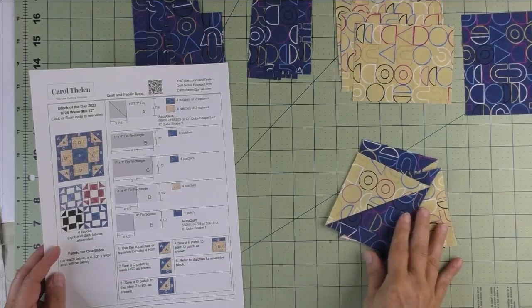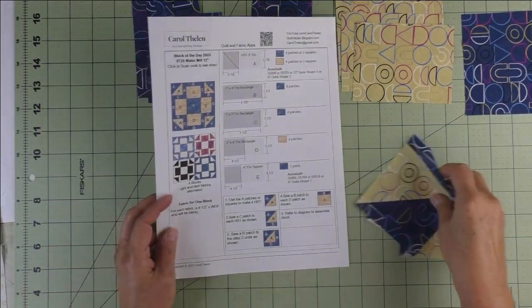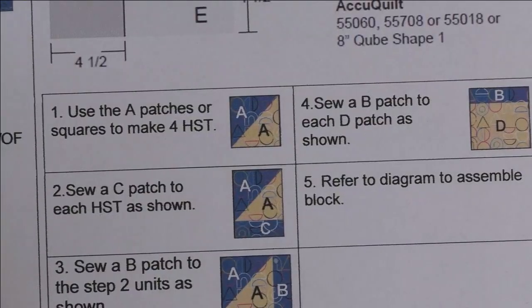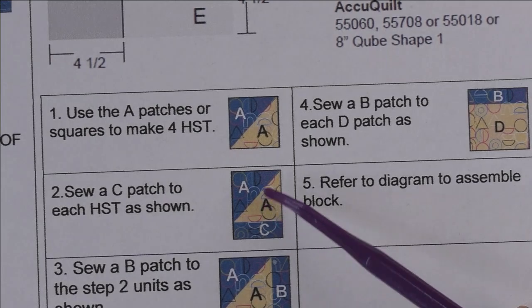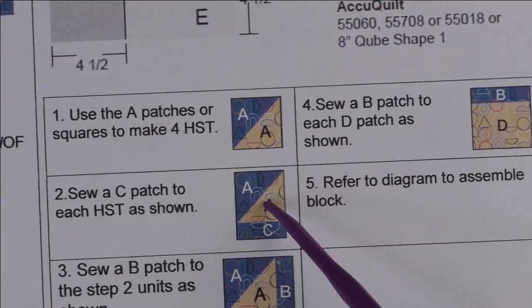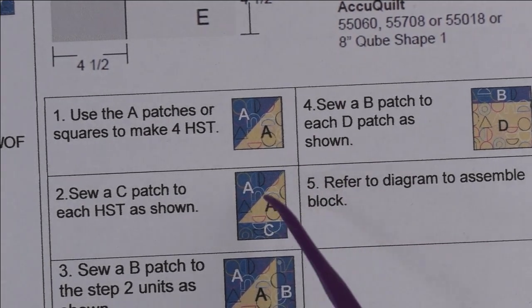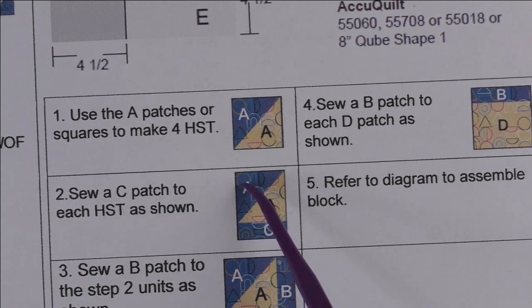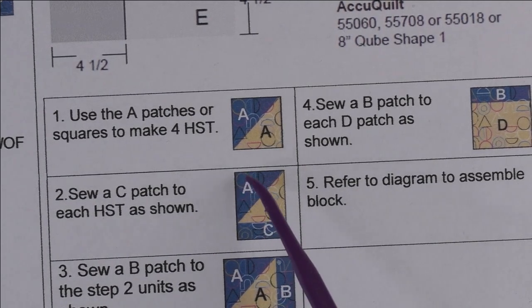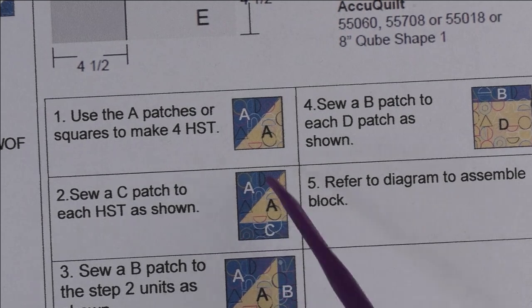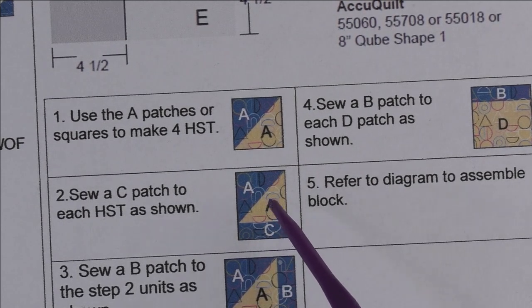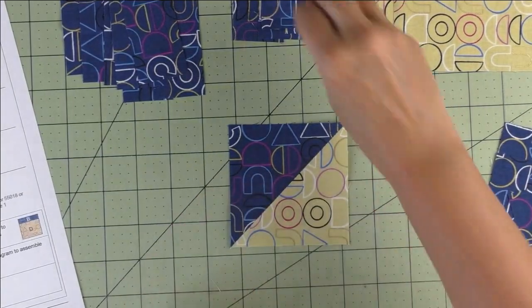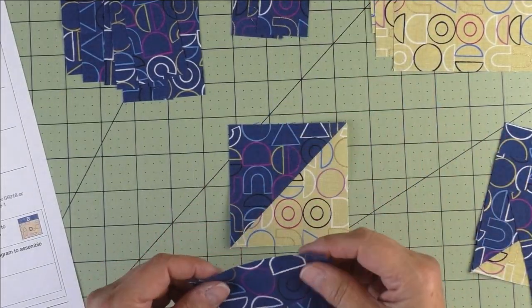The half square triangles are done. Now we'll move on to step two. We'll sew a patch C at the bottom of this half square triangle. Be sure you watch the placement of the light and dark fabrics because you're going to place it at the bottom with the dark in the upper left corner. If you're reversing these, remember that the dark fabric will be down here. Put it like this and patch C will be stitched down here. Make four of these.